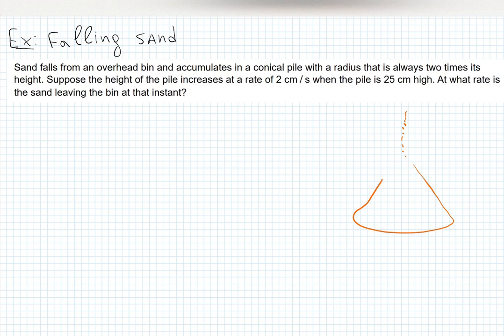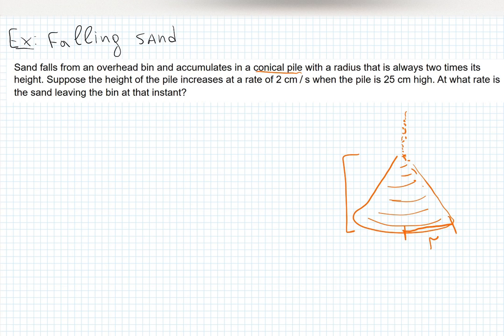The sand keeps falling and accumulates like a conical pile. Sand falls from an overhead bin and accumulates in a conical pile with a radius that is always two times its height. Suppose the height of the pile increases at the rate of two centimeters per second when the pile is 25 centimeters high.